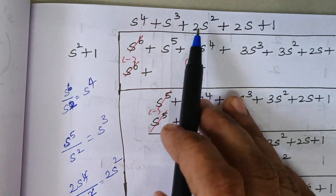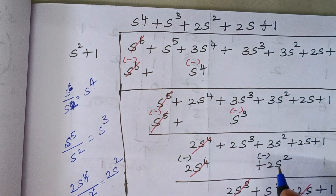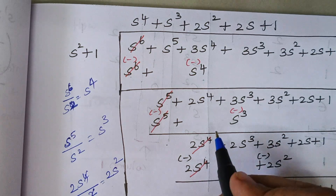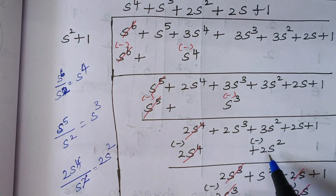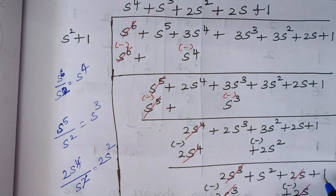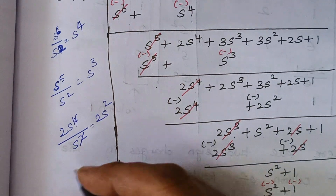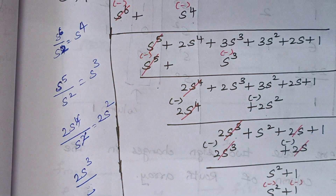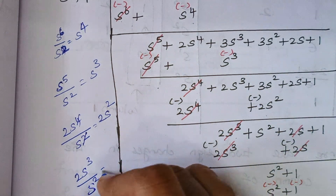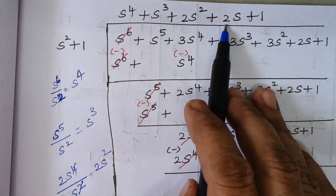Multiply: 2S² × S² gives 2S⁴, and 1 × 2S² gives 2S². When you subtract, these two terms cancel and the remaining term is 2S³; and 3 minus 2 is 1, so S² plus 2S plus 1. Again the first term is 2S³ divided by S², giving 2S. So our fourth term is 2S.